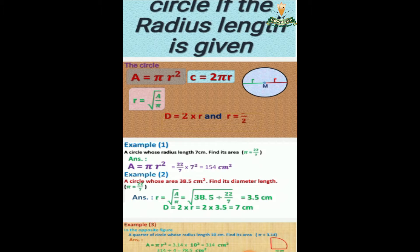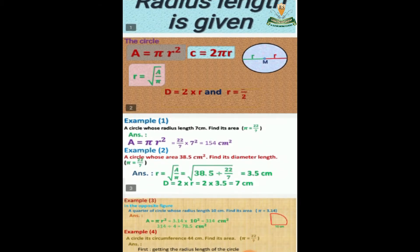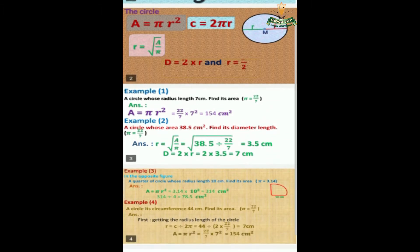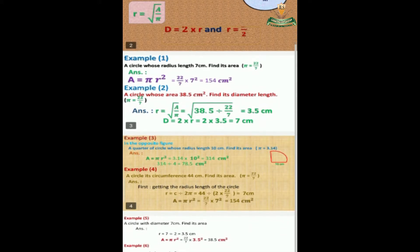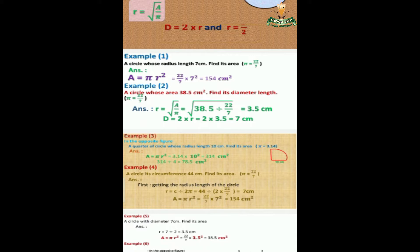The area of a circle equals π times r squared. If given the area, the radius equals the square root of A over π, where π equals 22 over 7 or 3.14. The diameter equals 2 times the radius, and the radius equals the diameter divided by 2.